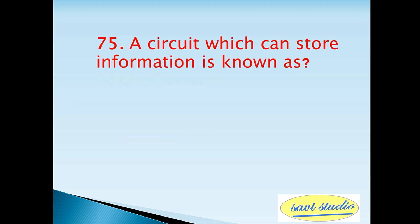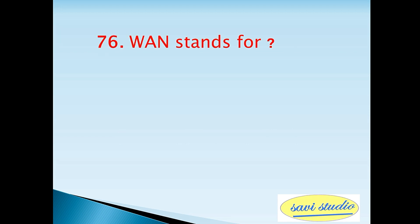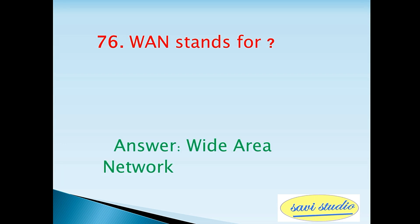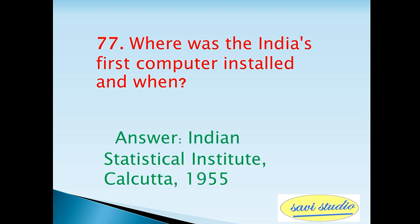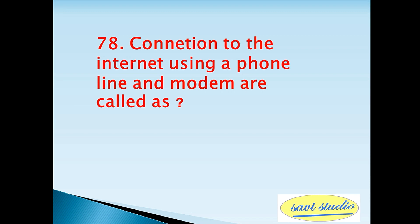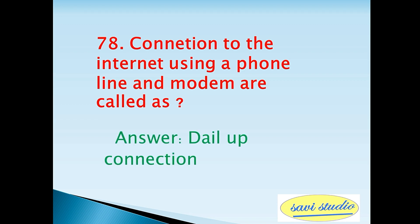Seventy-fifth question: a circuit which can store information is known as — answer: a memory cell. Seventy-sixth question: WAN stands for — answer: Wide Area Network. Seventy-seventh question: where was India's first computer installed and when? Answer: Indian Statistical Institute, Calcutta, 1955. Seventy-eighth question: connection to the internet using a phone line and a modem is called — answer: dial-up connection.